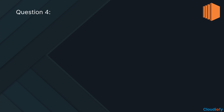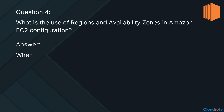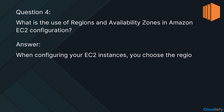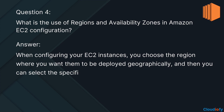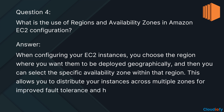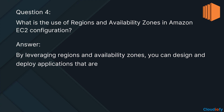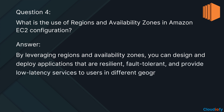The next question is: what is the use of regions and availability zones in Amazon EC2 configuration? When configuring your EC2 instances, you choose the region where you want them to be deployed geographically, and then you can select the specific availability zone within that region. This allows you to distribute your instances across multiple zones for improved fault tolerance and high availability, and to provide low-latency services to users in different geographic locations.